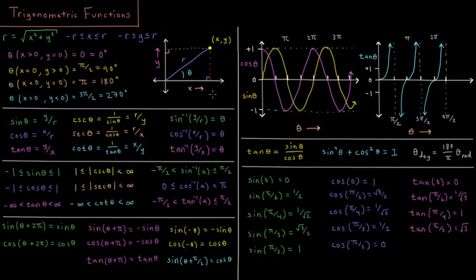If we are along the positive x axis, so x is positive and y equals 0, then our angle is 0 degrees or 0 radians. If we are along the plus y axis, where y is positive and x is 0, then we make an angle of 90 degrees or pi over 2 radians.